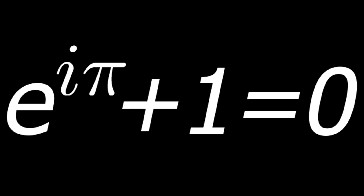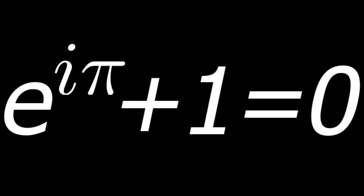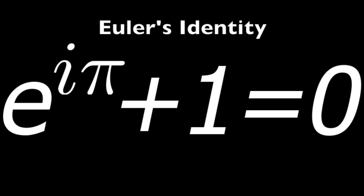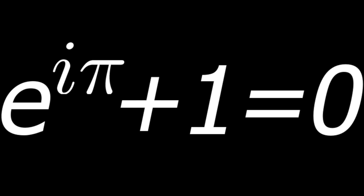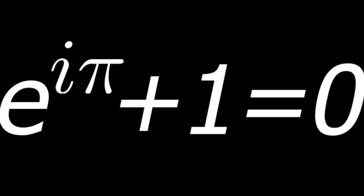The analysis of complex numbers is also made easier with Pi, and mathematicians have been known to get passionate about the beauty of Euler's identity, which involves five of the most fundamental mathematical constants: e, i, 0, 1, and of course, Pi.